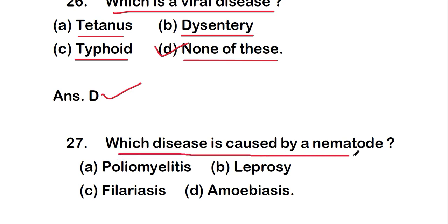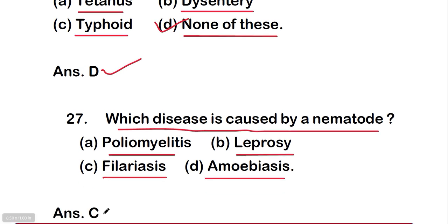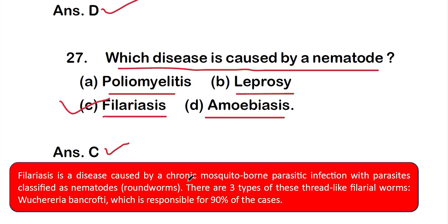Question number 27: Which disease is caused by a nematode? Options are — Option A: poliomyelitis, Option B: leprosy, Option C: filariasis, or Option D: amoebiasis. The right answer is Option C, filariasis. Filariasis is a chronic mosquito-borne parasitic infection caused by parasites classified as nematodes (roundworms). There are three types, with Wuchereria bancrofti responsible for 90% of cases.